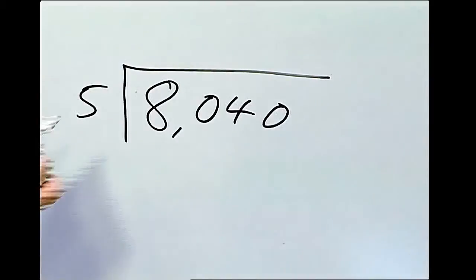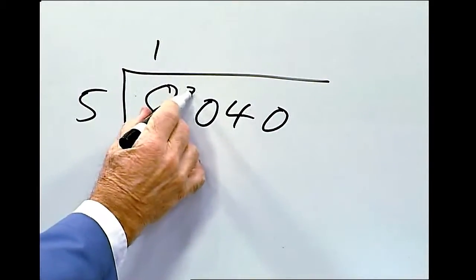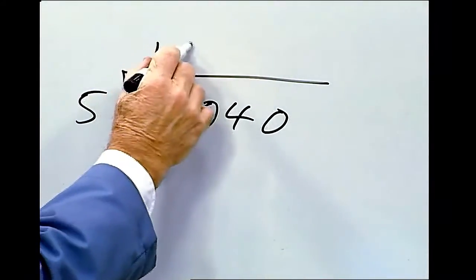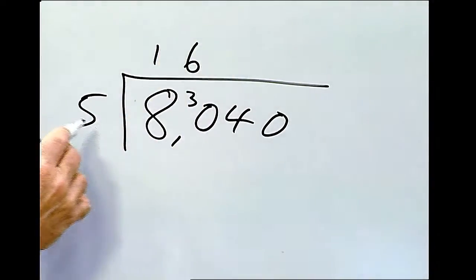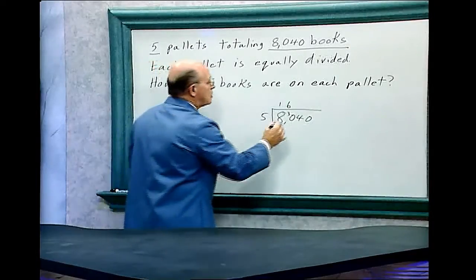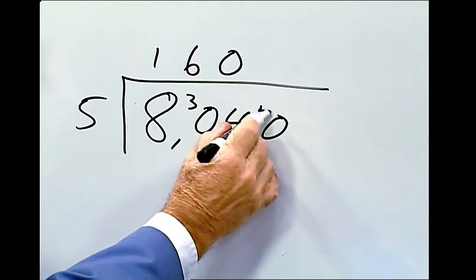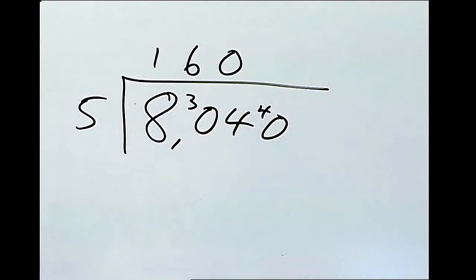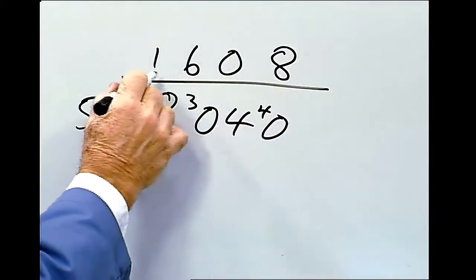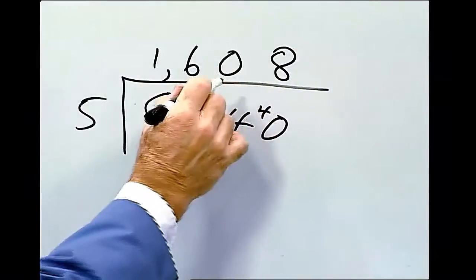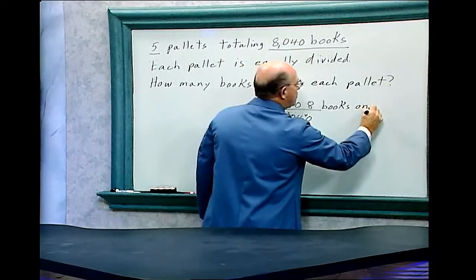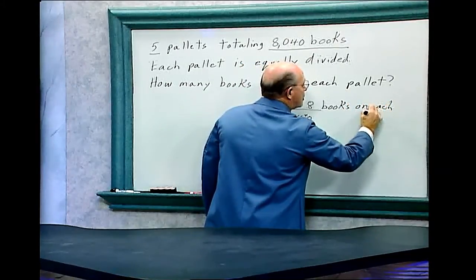5 goes into 8, one time, and 3 left over. 5 goes into 30, 6 times. 5 goes into 4. And here's where it gets a little tricky. It doesn't go into 4. So that's 0, and we carry the 4 to the next number. 5 goes into 40, 8 times. So there's 1,608 books on each pallet.